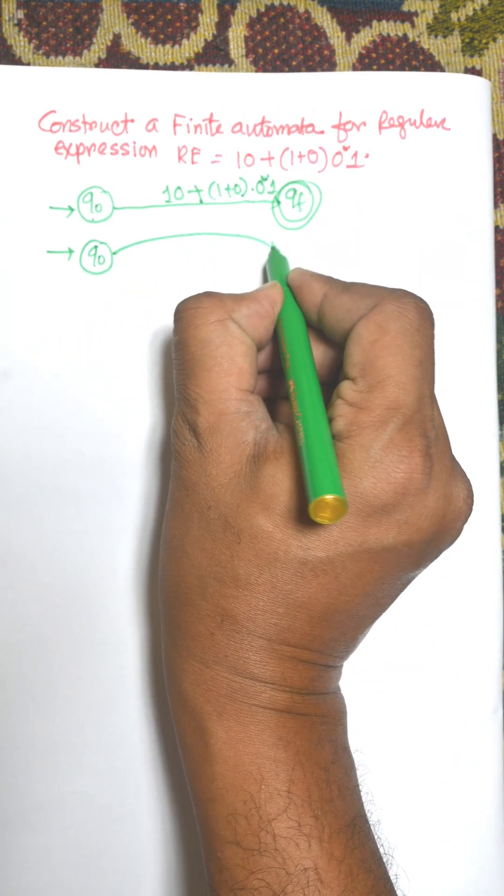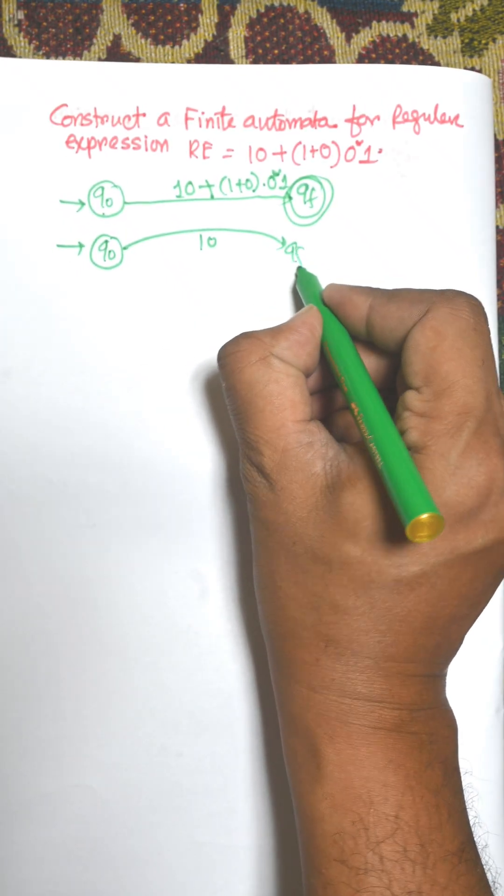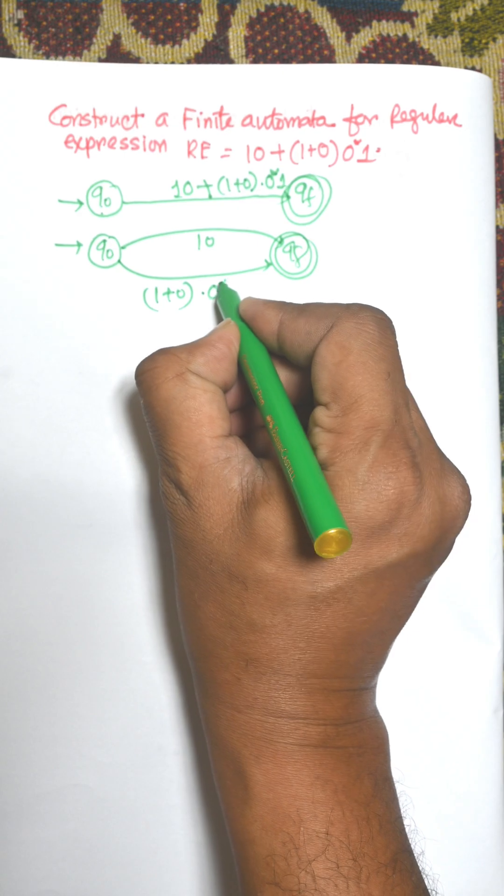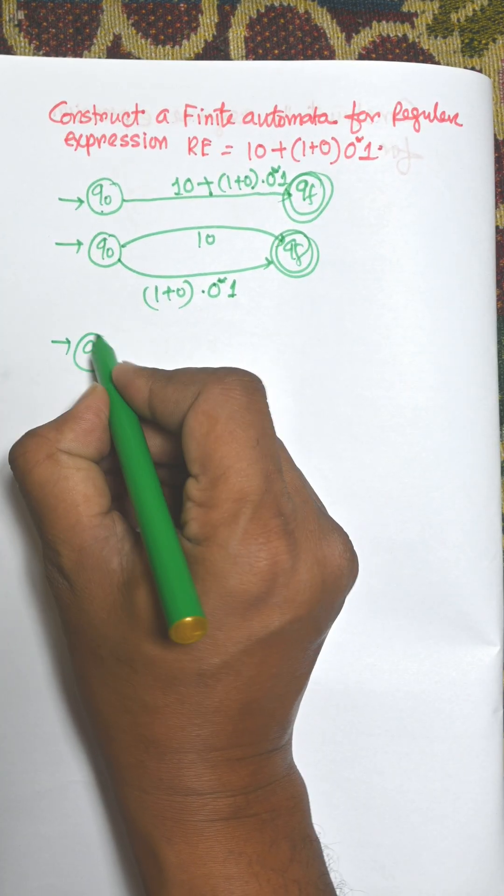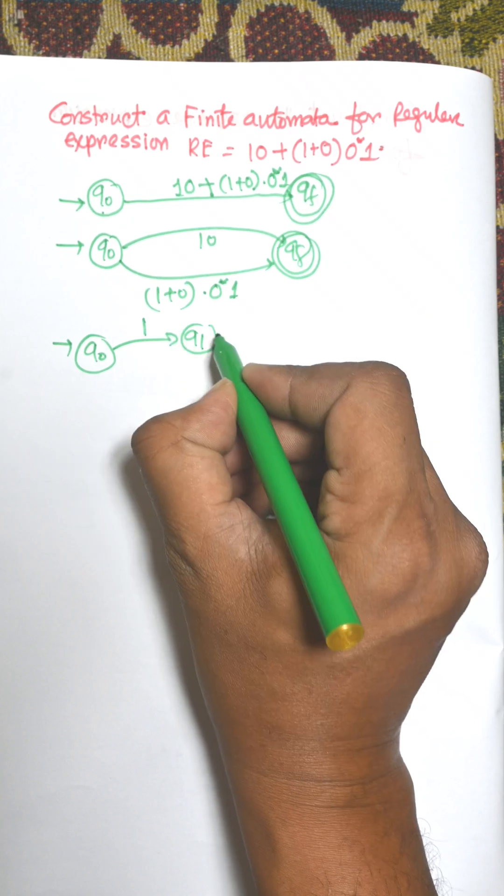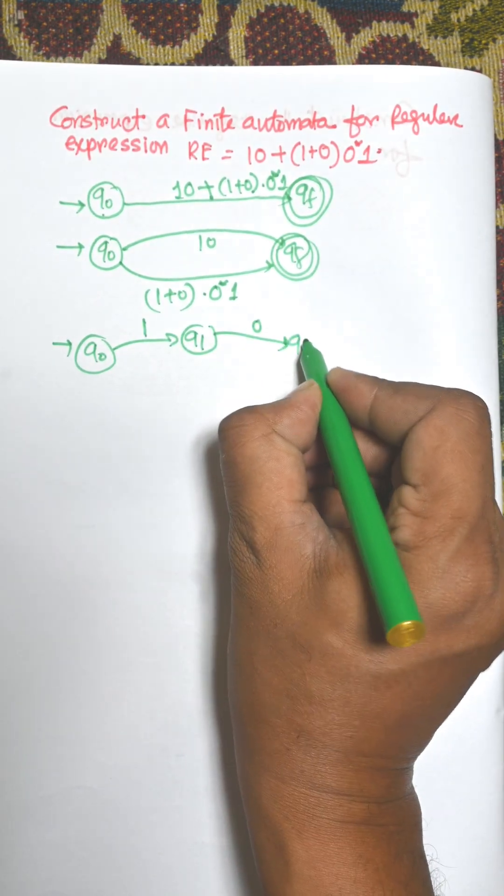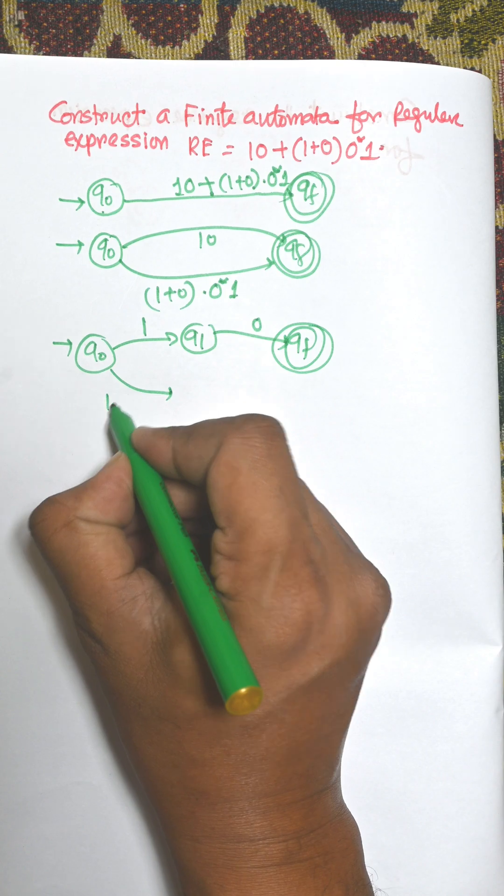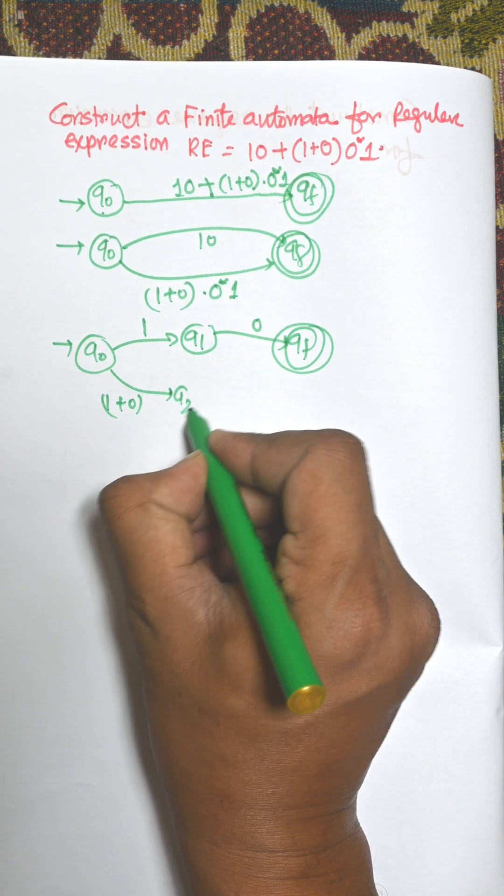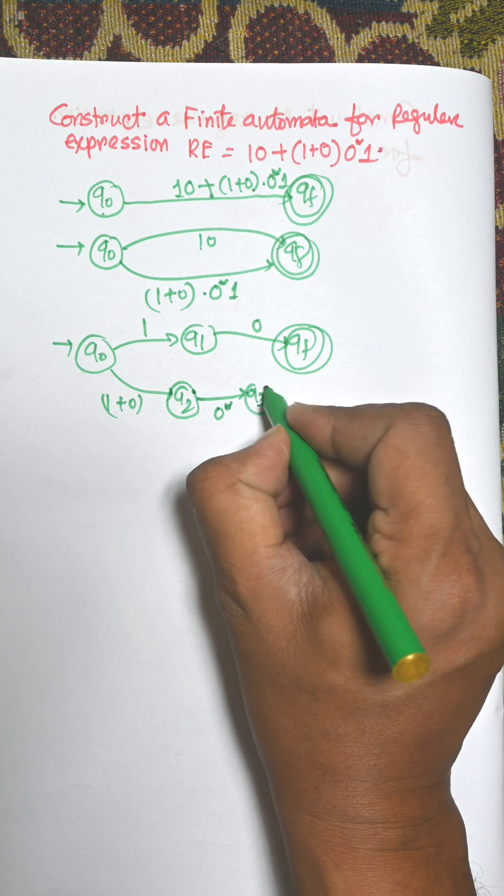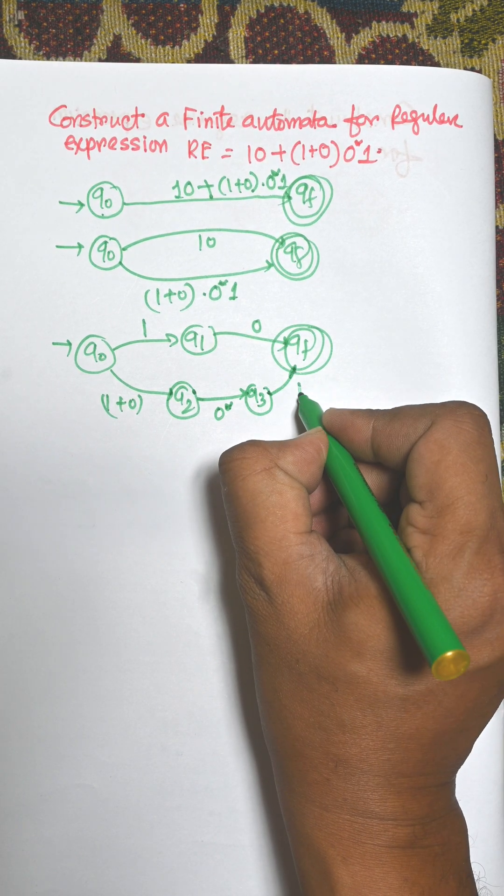This is a path from 1 to 0 to final. Another one is 1 plus 0 into 0 star into 1. For 10 there is a concatenation. This is q1 to 1 and this is 0 to qf. Now 1 plus 0, this is for 1 plus 0 into q2, and 0 star this is for q3, and next one is to the final state.